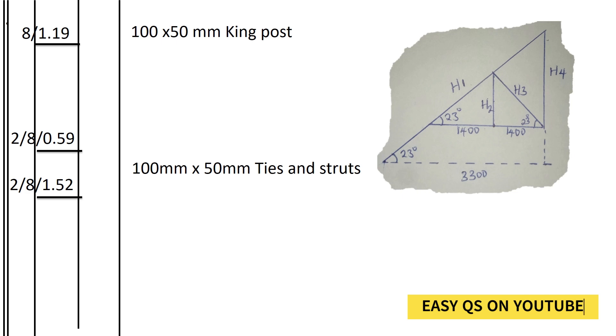It goes to the truss ties and struts. We start with the ties. How many ties do we have? Each truss has two ties and each tie is measuring 0.59. So it shall be two ties in each truss, eight trusses, we multiply by the length of the ties is 0.59.